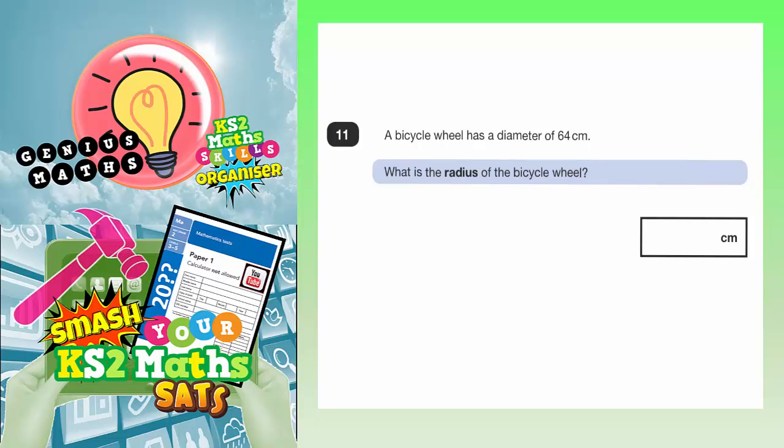Question 11. A bicycle wheel has a diameter of 64 centimeters. What is the radius of the bicycle wheel?